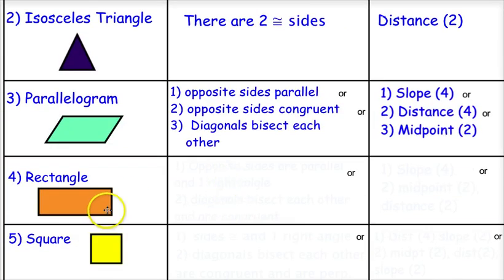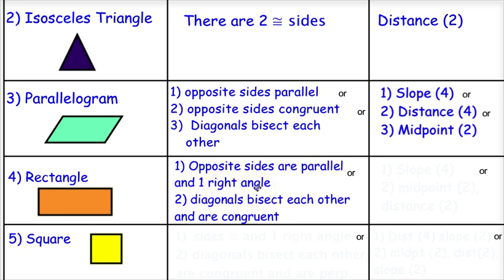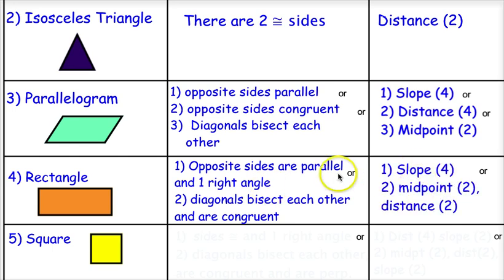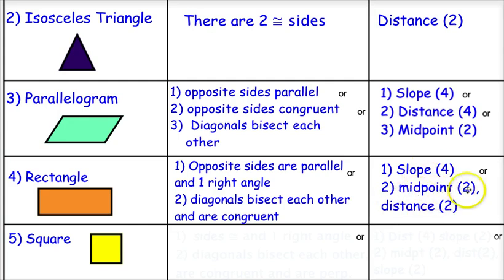For a rectangle — a parallelogram with one right angle — I can show the opposite sides are parallel and it has one right angle, which means using the slope formula four times plus showing two consecutive sides have slopes that are negative reciprocals. Or I can show the diagonals bisect each other using midpoint twice, and then show the diagonals are congruent using the distance formula twice. Either way, you're doing four total operations.